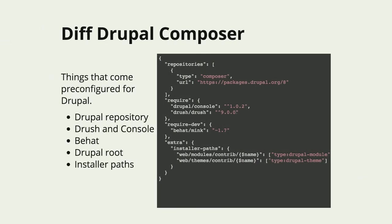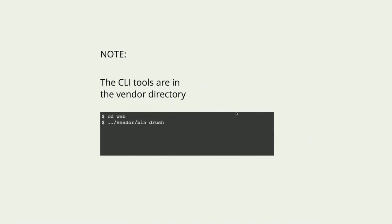One last thing Drupal Composer does is it provides a set of path configs so that when it asks drupal.org for a contrib module, that module goes in our contrib directory rather than the vendor directory. So this is actually where that's configured - modules/contrib and themes/contrib with the name of the module being grabbed. There's metadata that says if it's a Drupal module, it goes in modules/contrib. That was a bit of magic that I didn't know was actually happening, and I thought I'd share that with you guys.